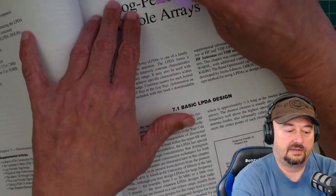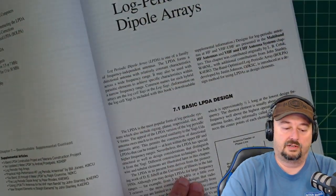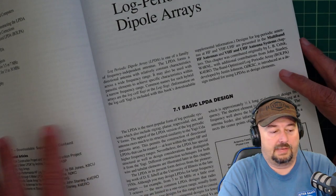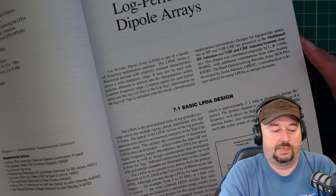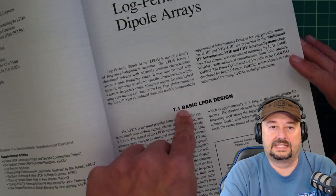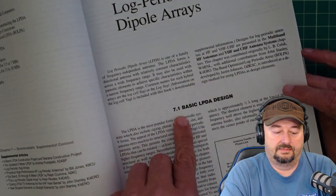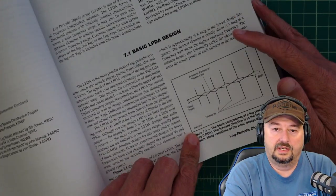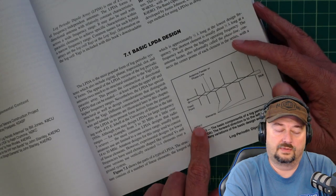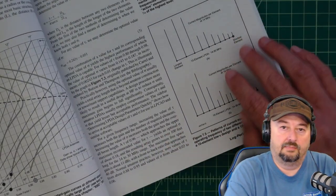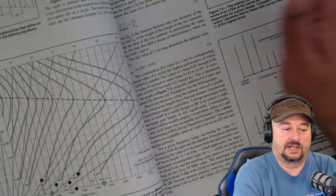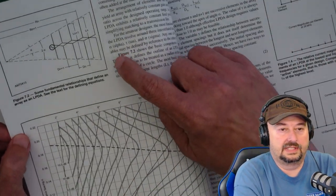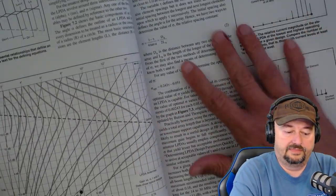And here's another chapter here on dipole arrays and log periodics. And the format is very similar to what we saw with the loop antennas, but now it's specific to these types. It talks about some basic design principles, and it has some really good diagrams like this one in here that you can use. More diagrams that talk about different directors and reflectors. Here's an example of an antenna here. Really handy stuff.